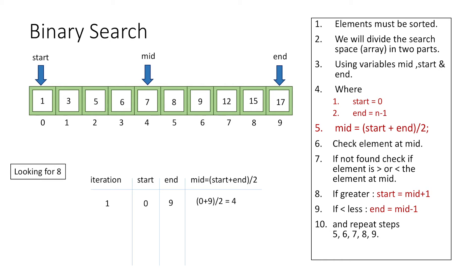The value at the middle index is 7, but we are searching for 8. Since 8 is greater than 7, in the next iteration we set start = mid + 1 = 5, with no change to end. This means we now search only in the sub-array from index 5 to 9, and we are sure the element is not present in the sub-array 0 to 4. We have reduced our search space by half.